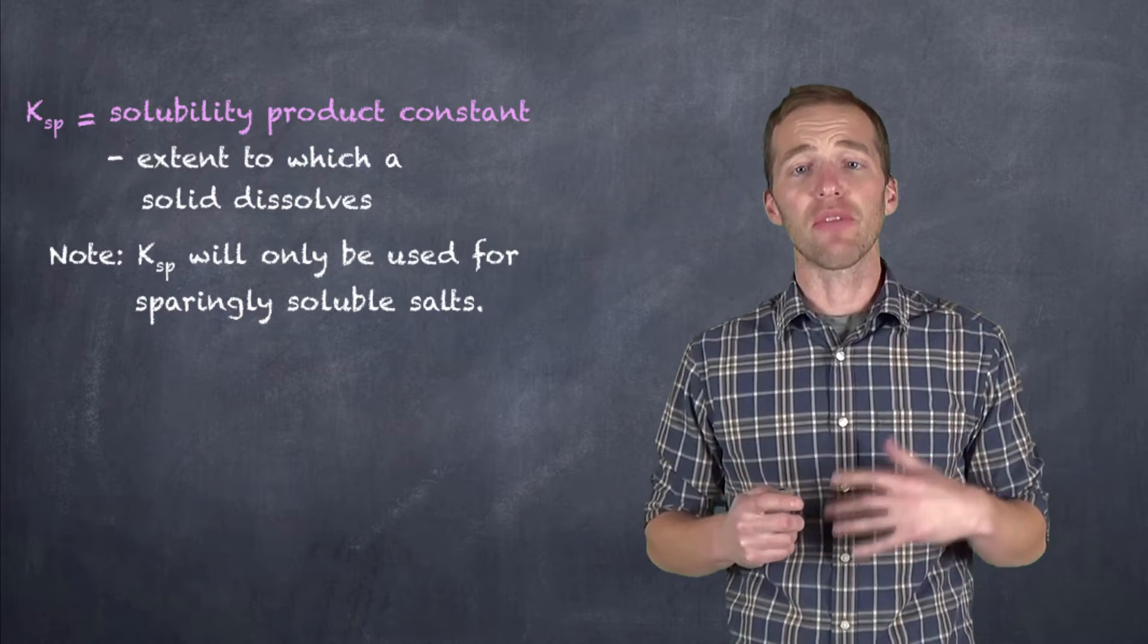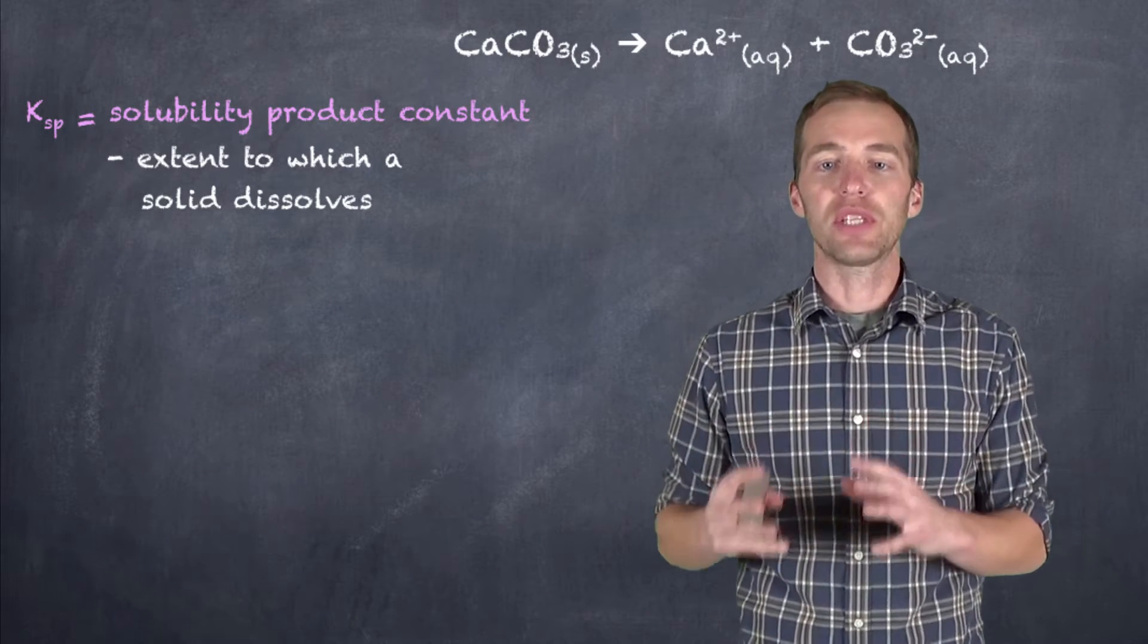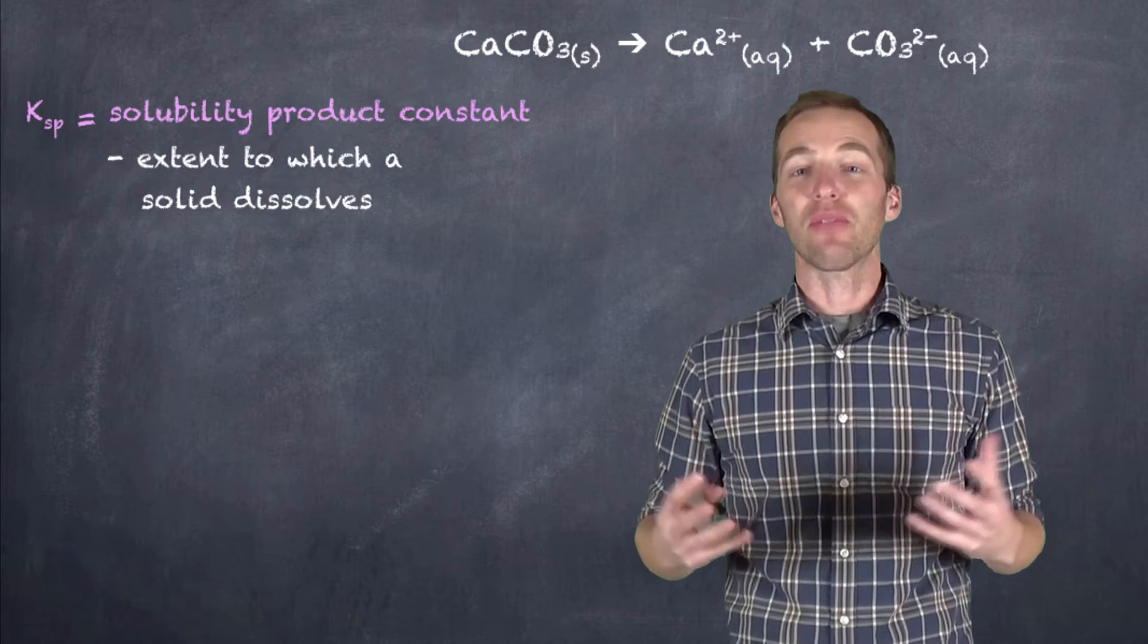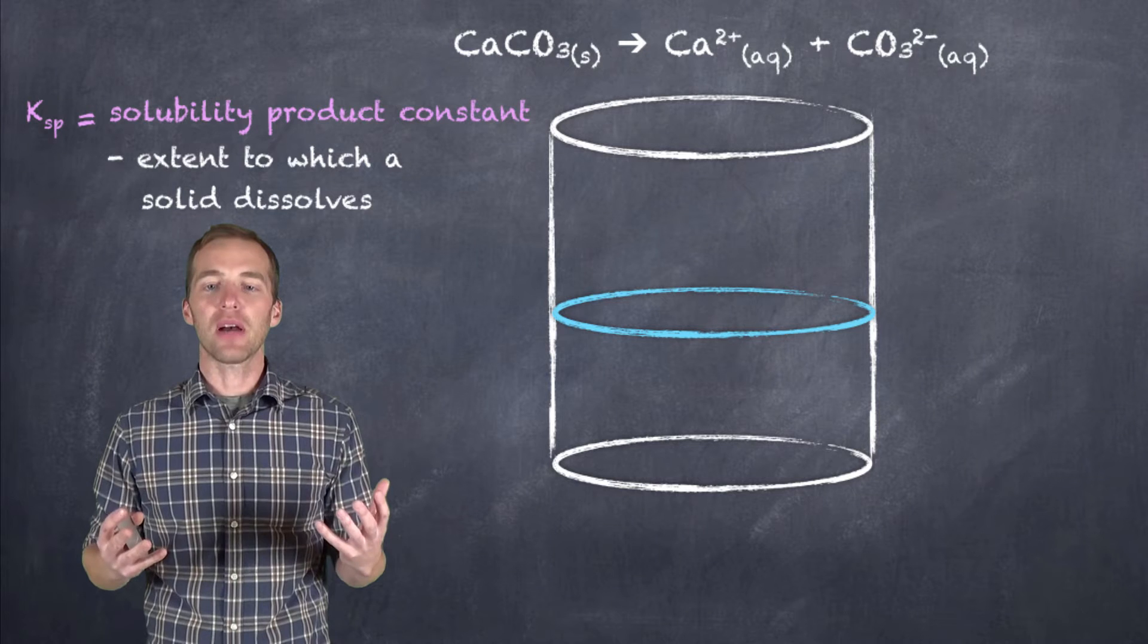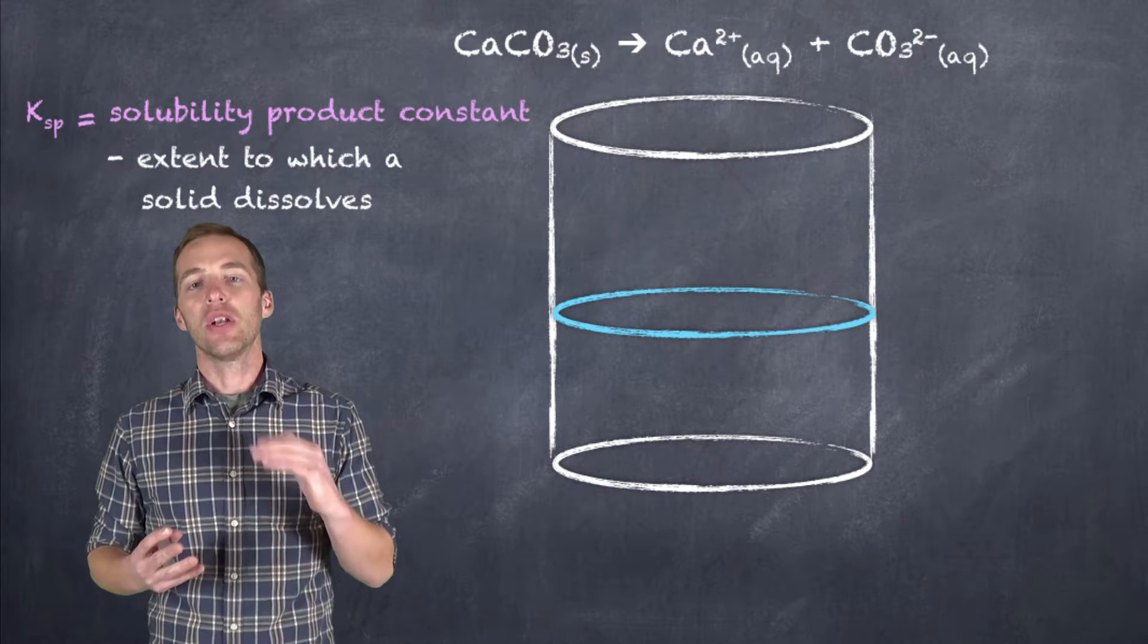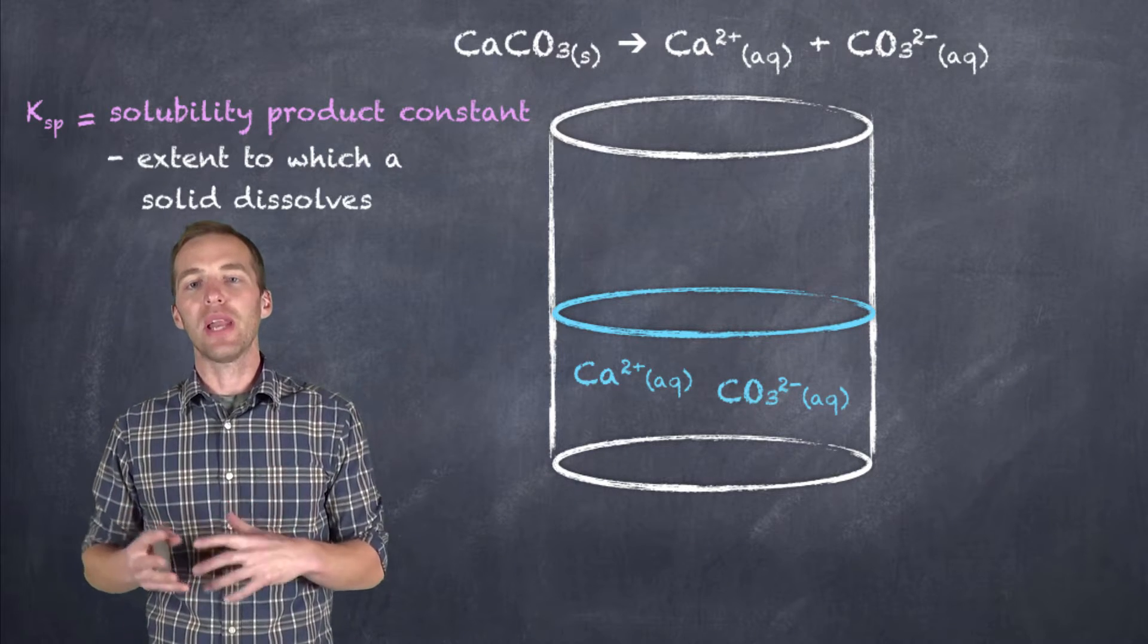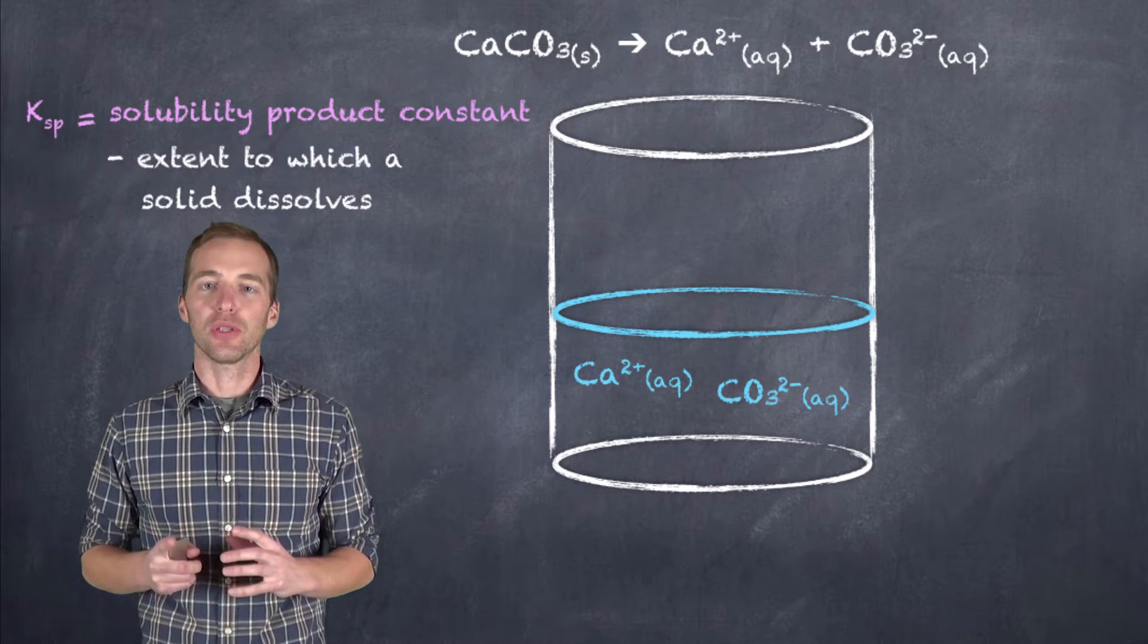So the scenario that we're looking at first is that in which calcium carbonate dissolves in water. Now it doesn't dissolve readily, but just about everything dissolves to some extent in water. And so if we take a look at a scenario where we put some calcium carbonate in water, a very small amount, that is, not enough to reach the point of saturation, we can see that we're going to have calcium ions and carbonate ions within this particular solution.